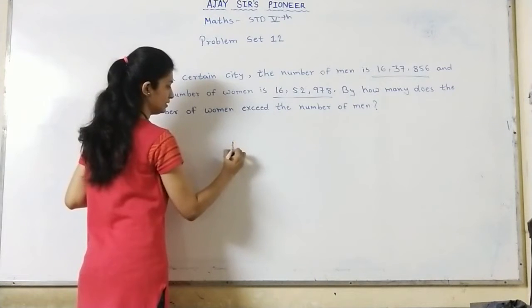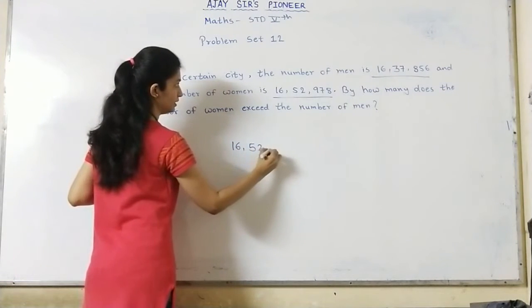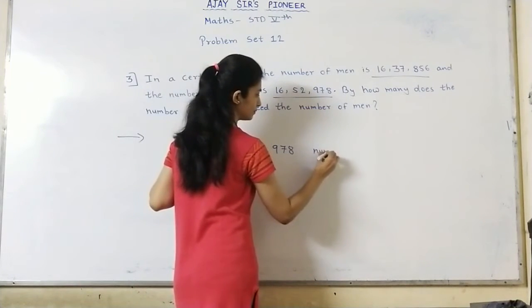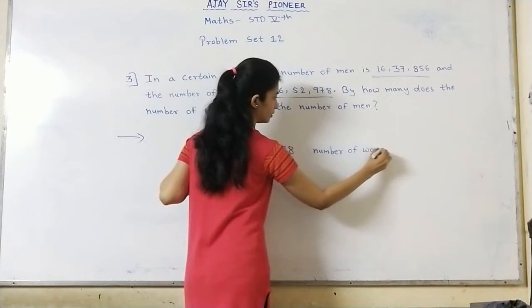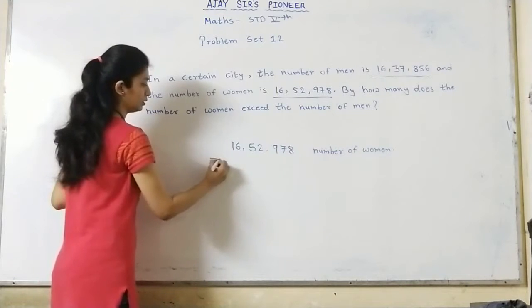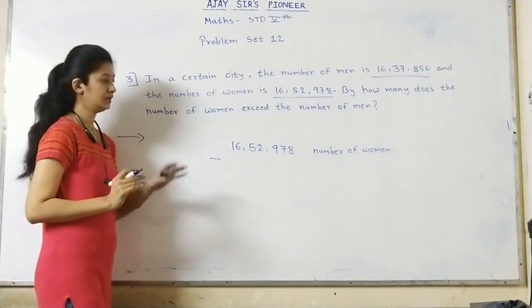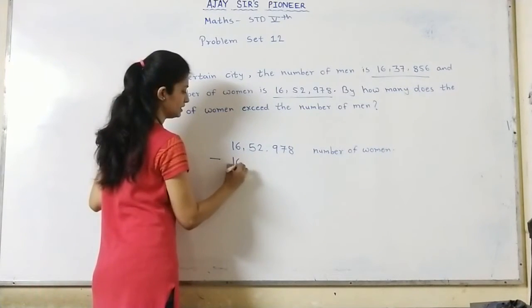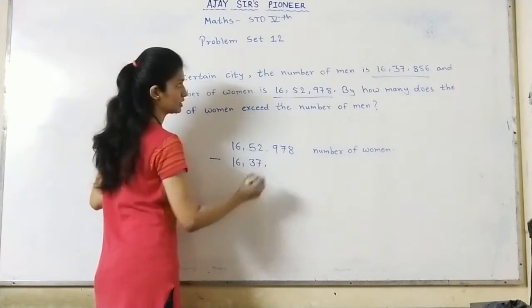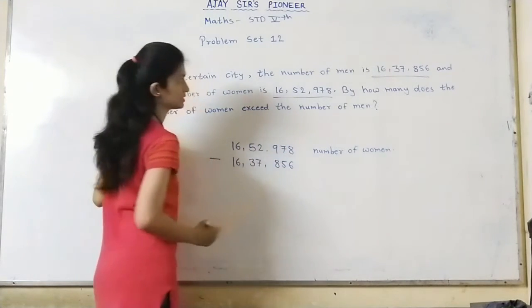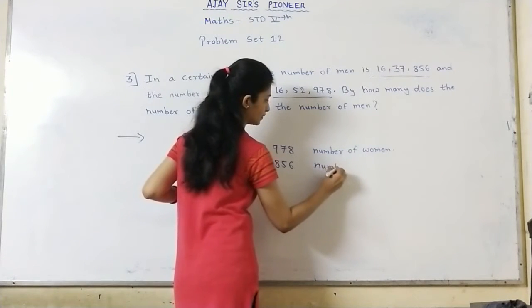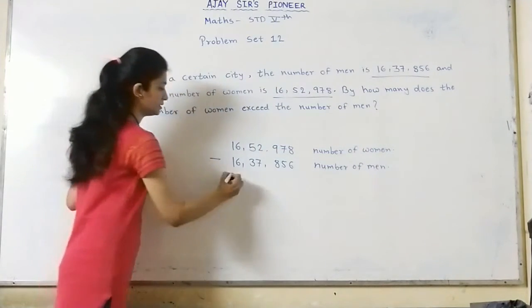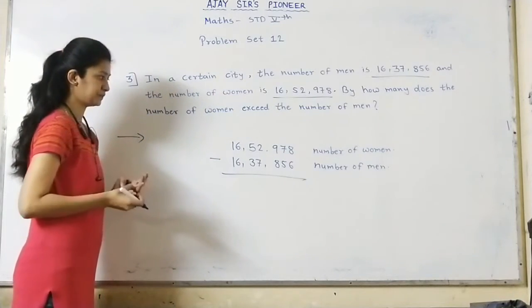That means 16,52,978, number of women. Now write the smaller number at the bottom. Next, 16,37,856, number of men. Now let's subtract and find the difference.